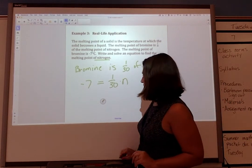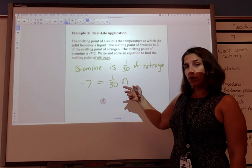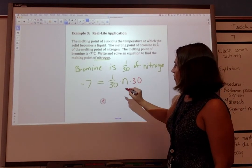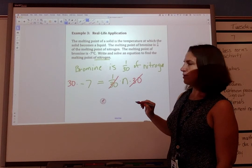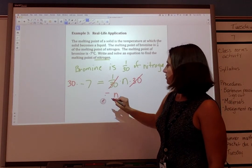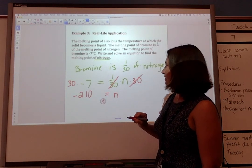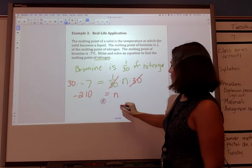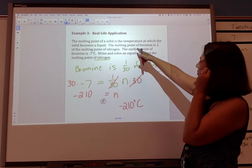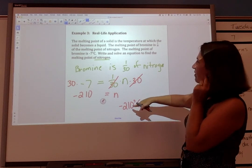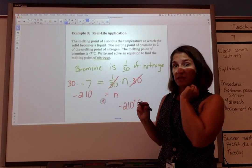Now let's solve it. To solve for n, we multiply by the reciprocal of one third, which is 30 — wait, the reciprocal of one third is 30 — so we multiply both sides by 30. One over thirty times thirty is 1, leaving just n. On the left, 30 times negative 7 is negative 210. So the melting point of nitrogen is negative 210 degrees Celsius. Let's check: one thirtieth of negative 210 is negative 7 — that matches the melting point of bromine. That makes sense, so we are good to go.